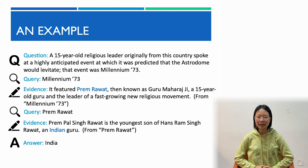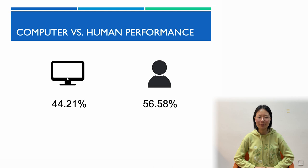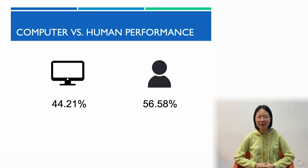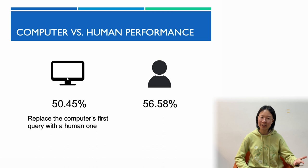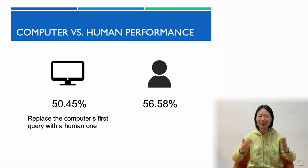Our human contestants were better than our computer contestants. 56% of the quiz bowl questions are correctly answered by players, while only 44% are correctly answered by IRRR. But those humans are using computers to cheat. Can computers improve based on how humans answer? If we replace the computer's first query with a human one, IRRR jumps from 44% to 50%, unlocking a reasoning path that makes previously unanswerable questions answerable within three steps.